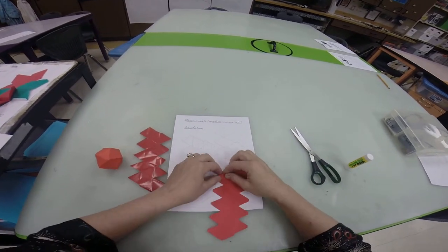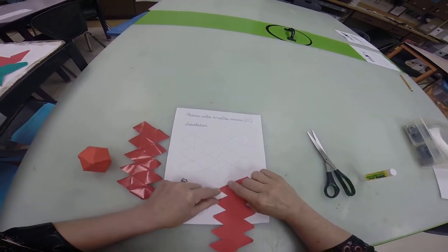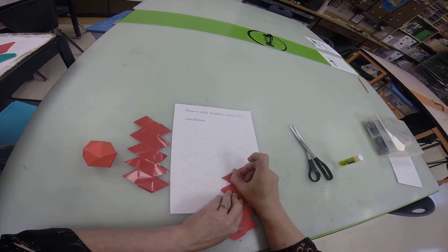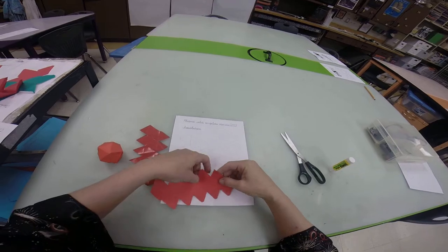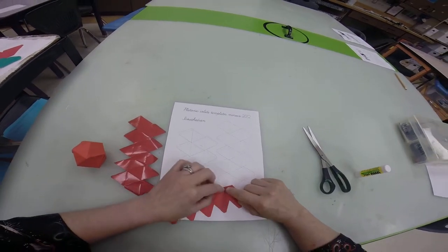And then you are going to fold right on the dotted lines. Make sure that you use the back of your thumbnail or some object to crease that. You want those creases really tight. And crease each one.